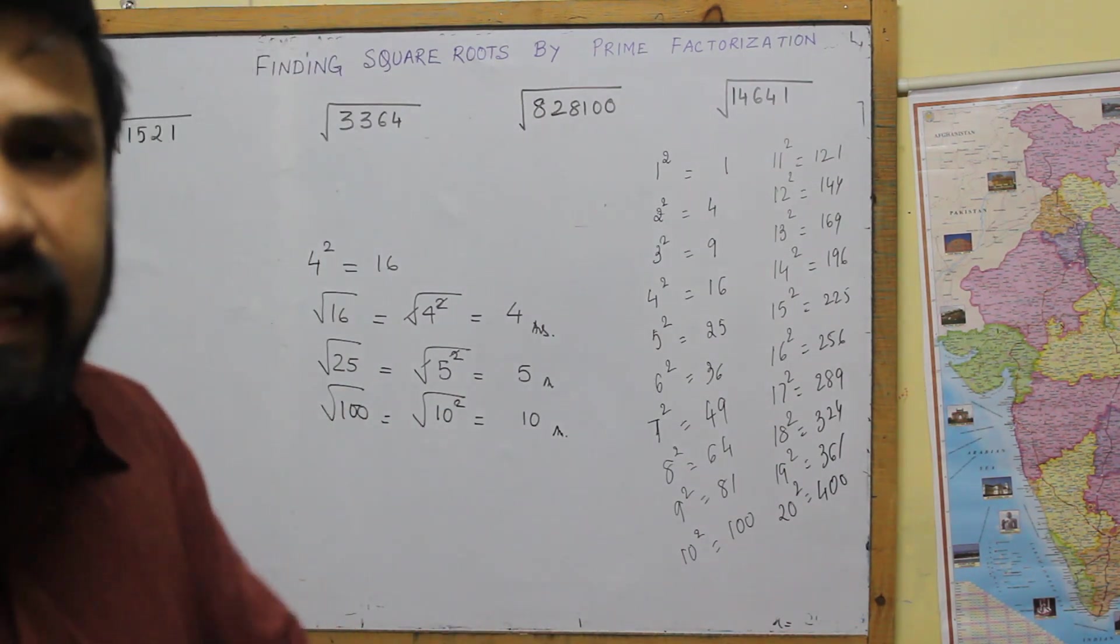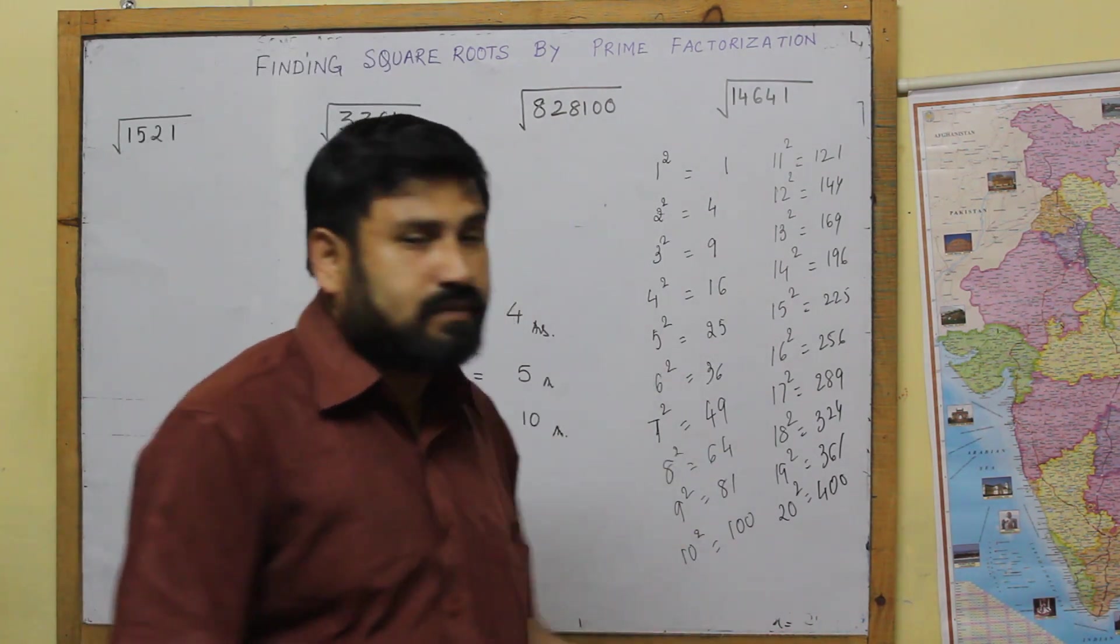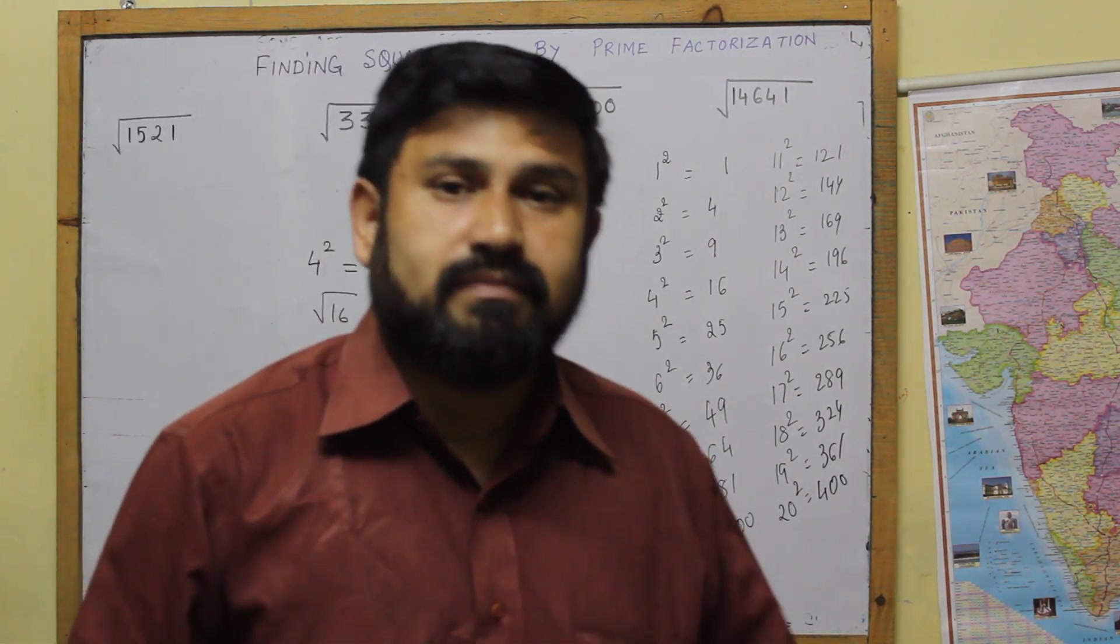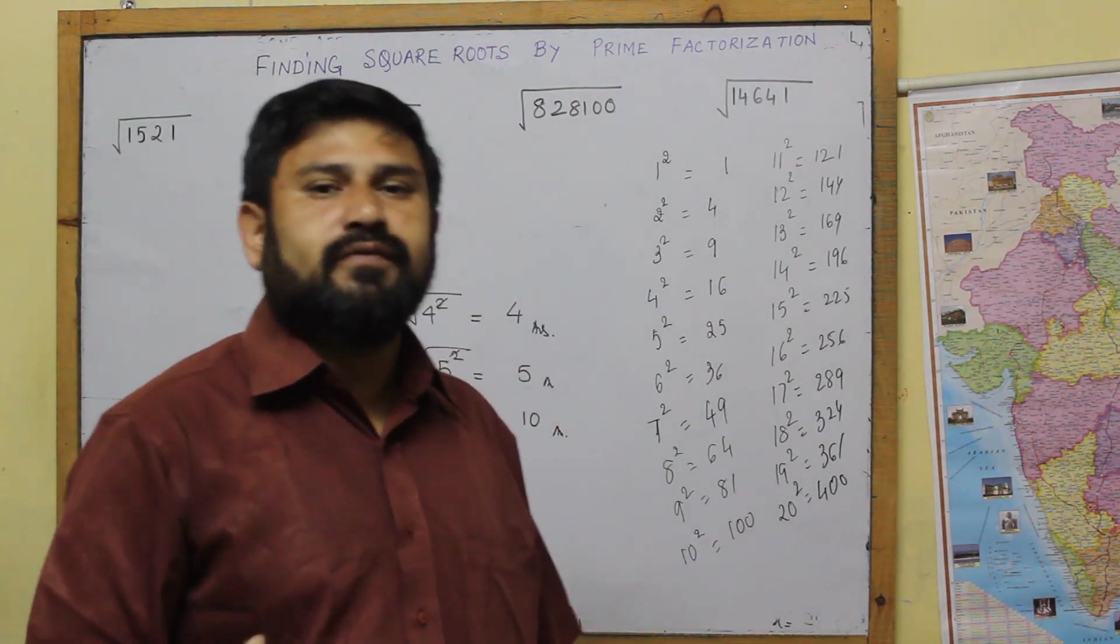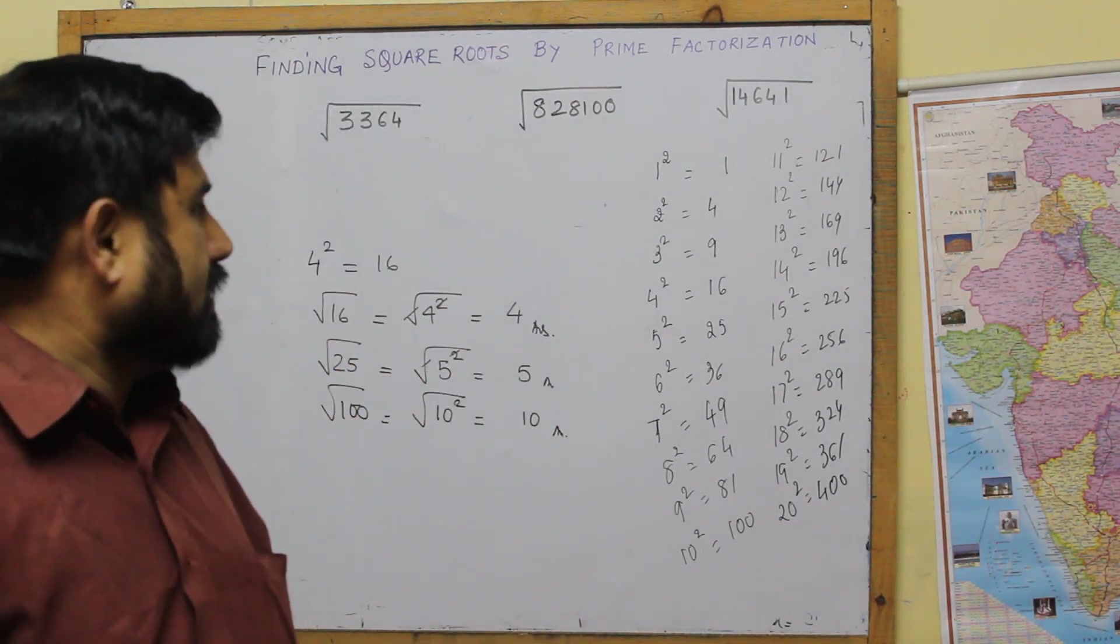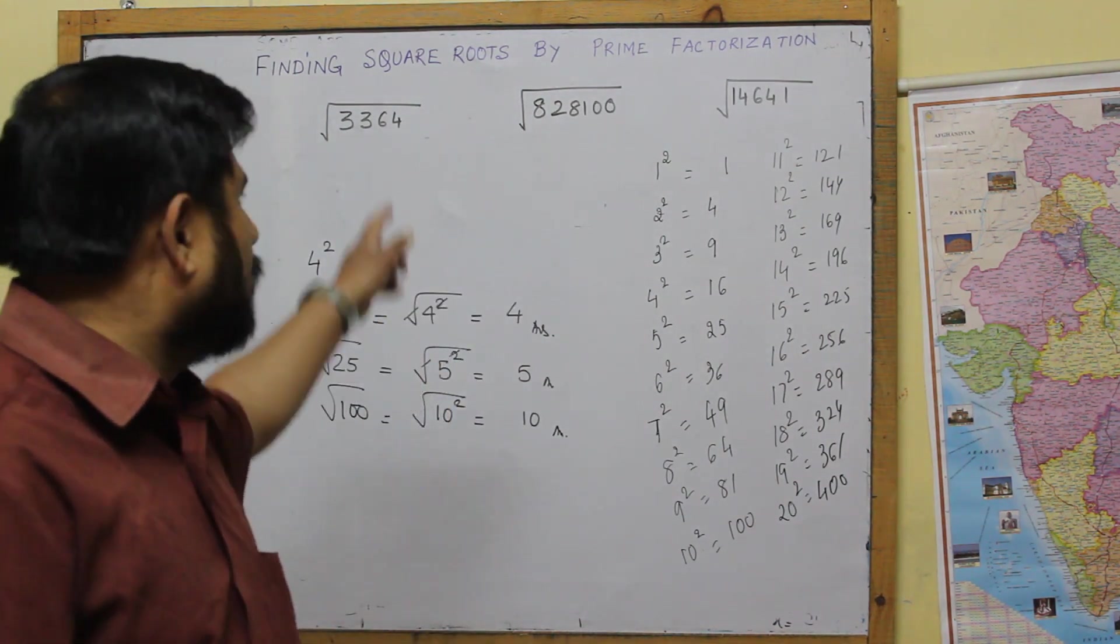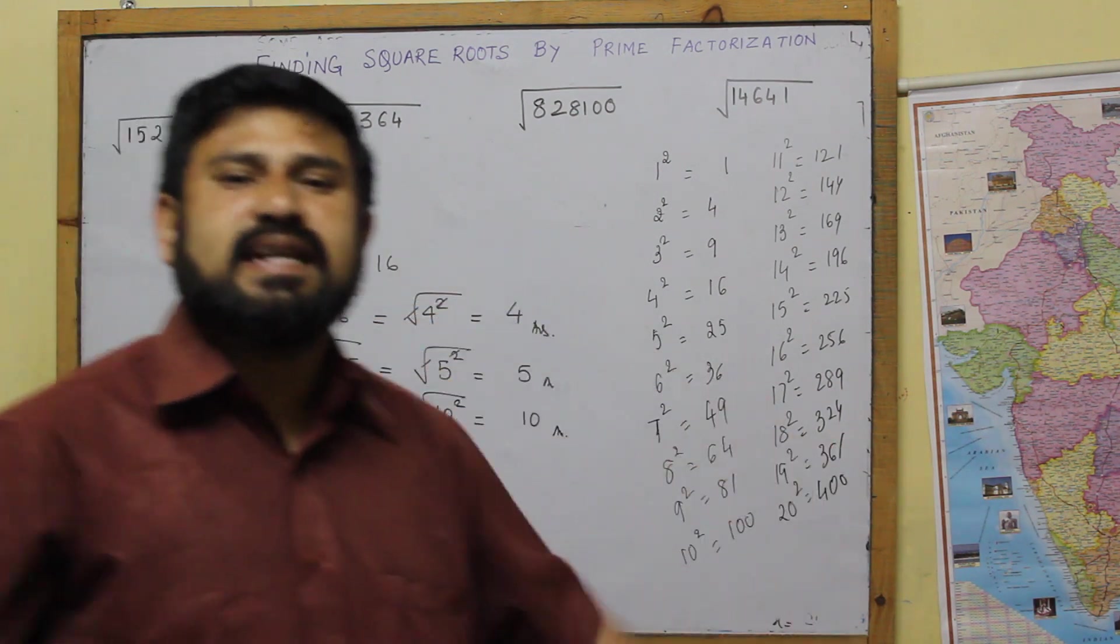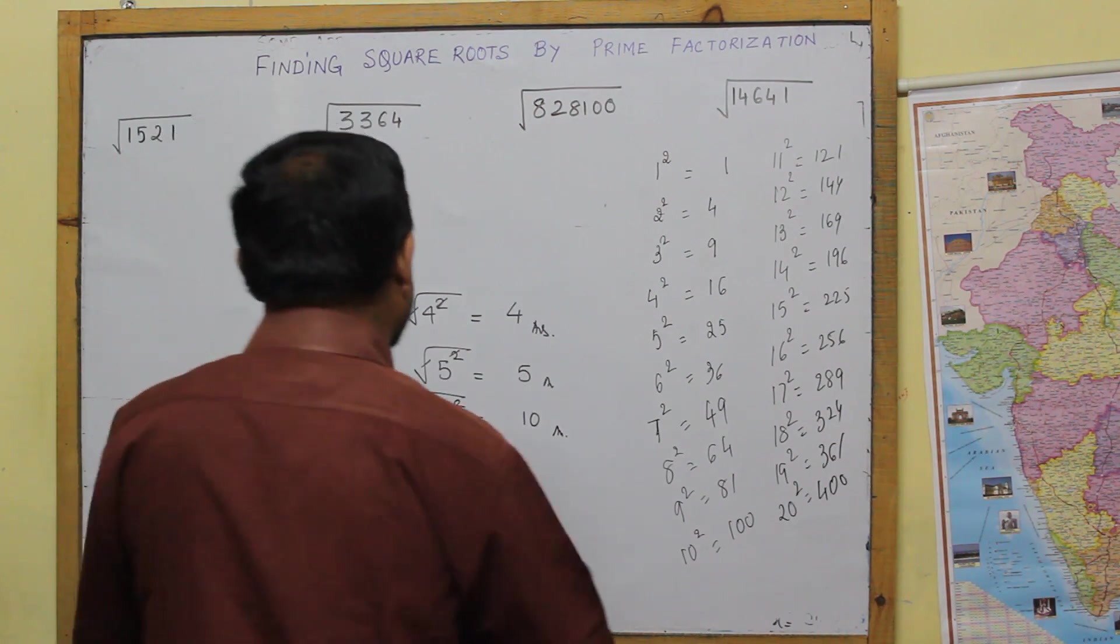But let's take a larger one. Actually, when we do square root by prime factorization method, the bigger ones become difficult. So for bigger ones, there is another method, there is a long division method. That I will do in the next class. But you just see, when it comes to bigger numbers also, we can find out by prime factorization, but it does take a little bit longer. Now, let's try to do a few sums with that.